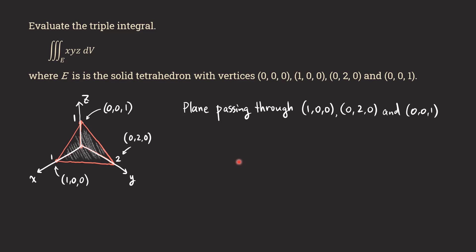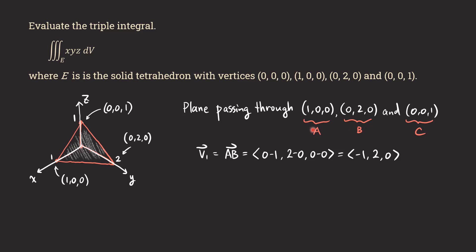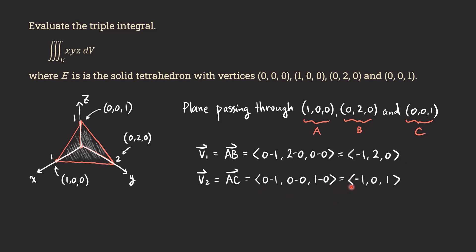Now we label those three points A, B, and C. We need to use those three points to form two vectors. One of them is vector AB — we use A as the starting point and B as the terminal point, subtract the coordinates, and get V1. Then we do the same for AC, using A as the starting point again, and we get V2.